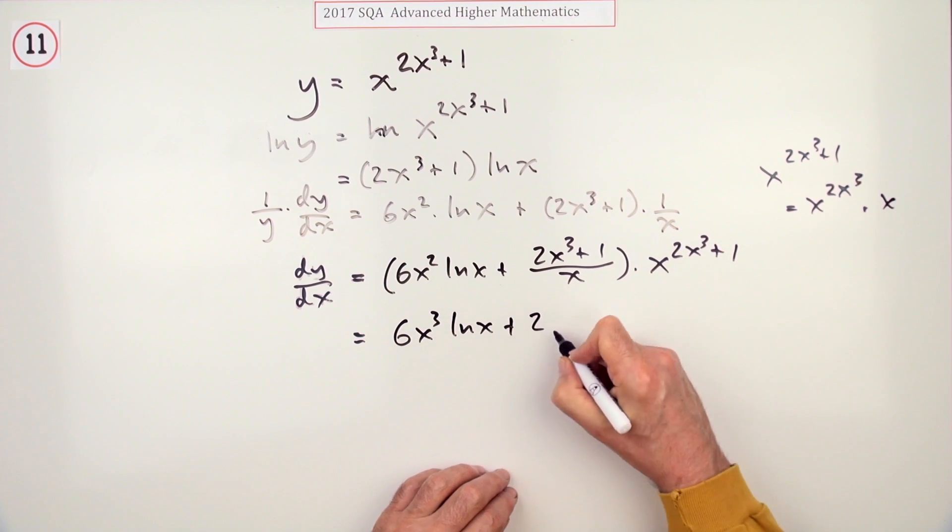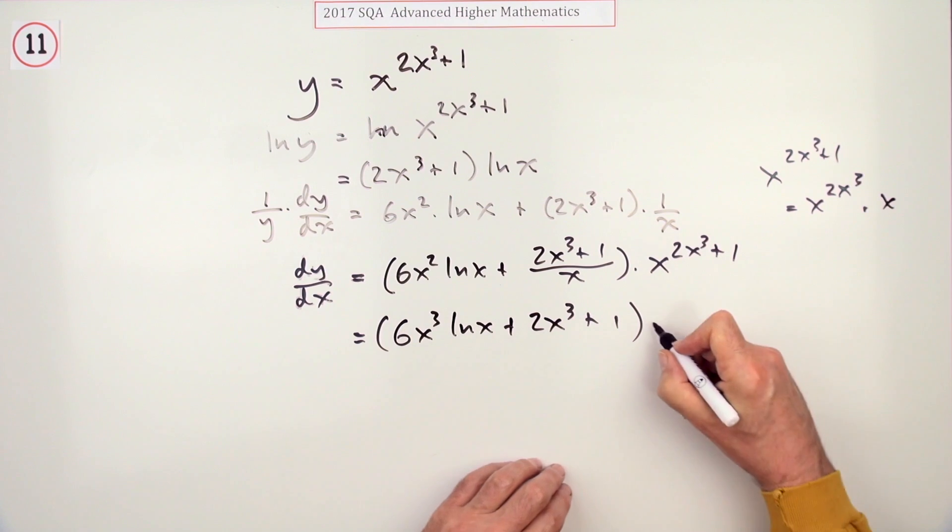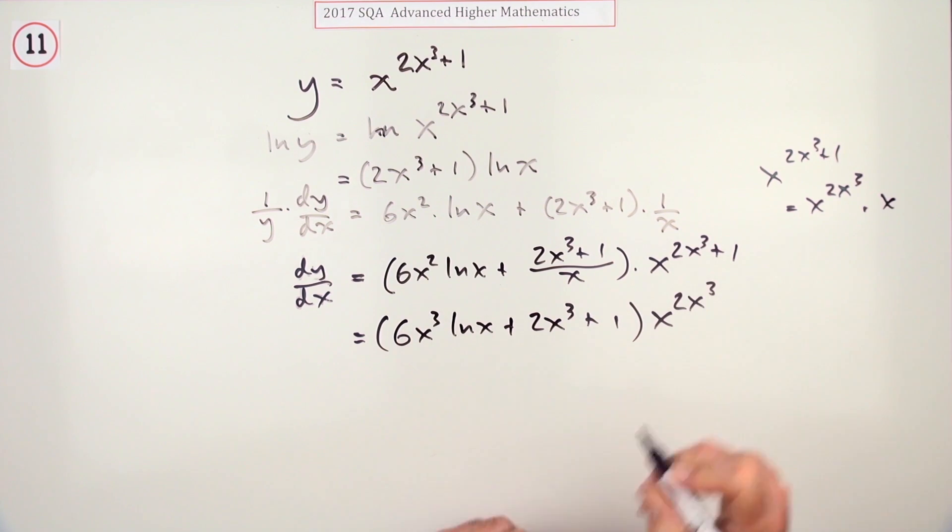But at least that part just becomes 2x cubed plus 1. So it would be that times x to the 2x cubed.